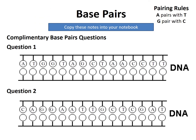Please copy these complementary base pair questions into your notebook. The pairing rules are provided in the top right-hand corner — A pairs with T, G pairs with C — to help you complete the two questions and fill in the complementary strand of DNA. Please pause the video so that you can do this.